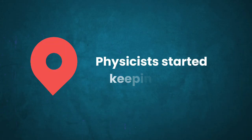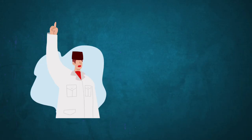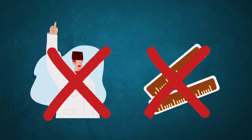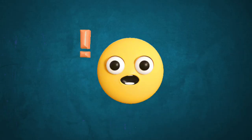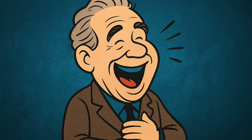Physicists started keeping track. If a delicate experiment failed, or some equipment broke for no reason, someone would always ask, was Pauli anywhere nearby? And weirdly, he often was.